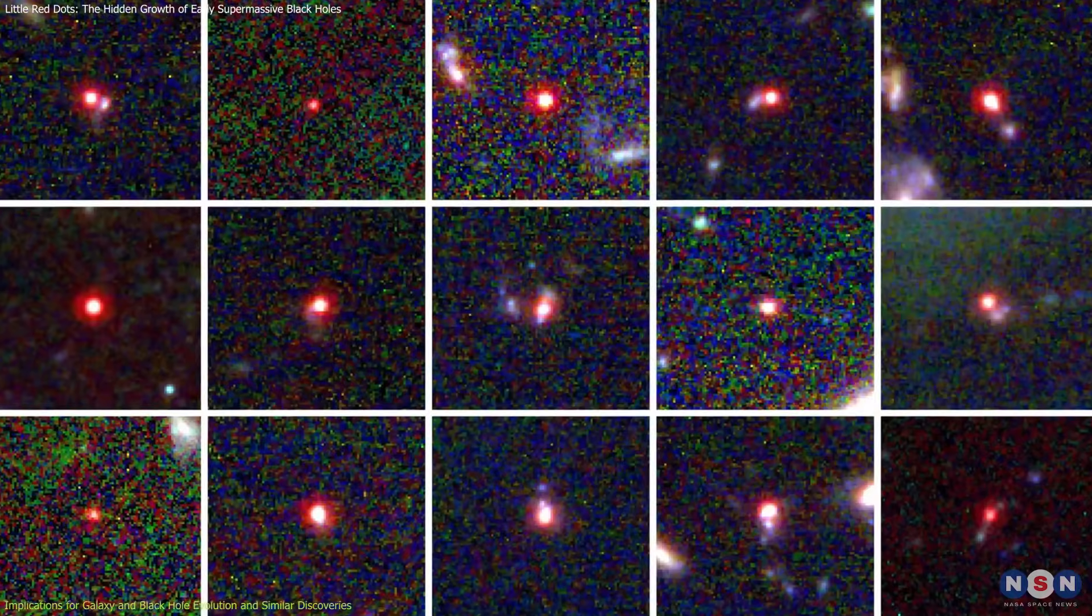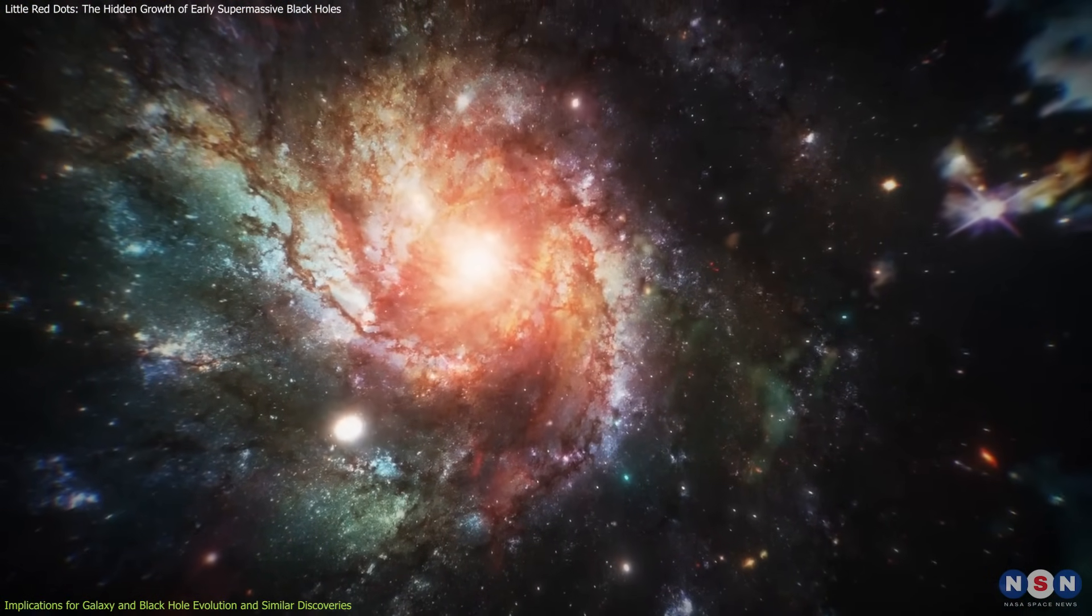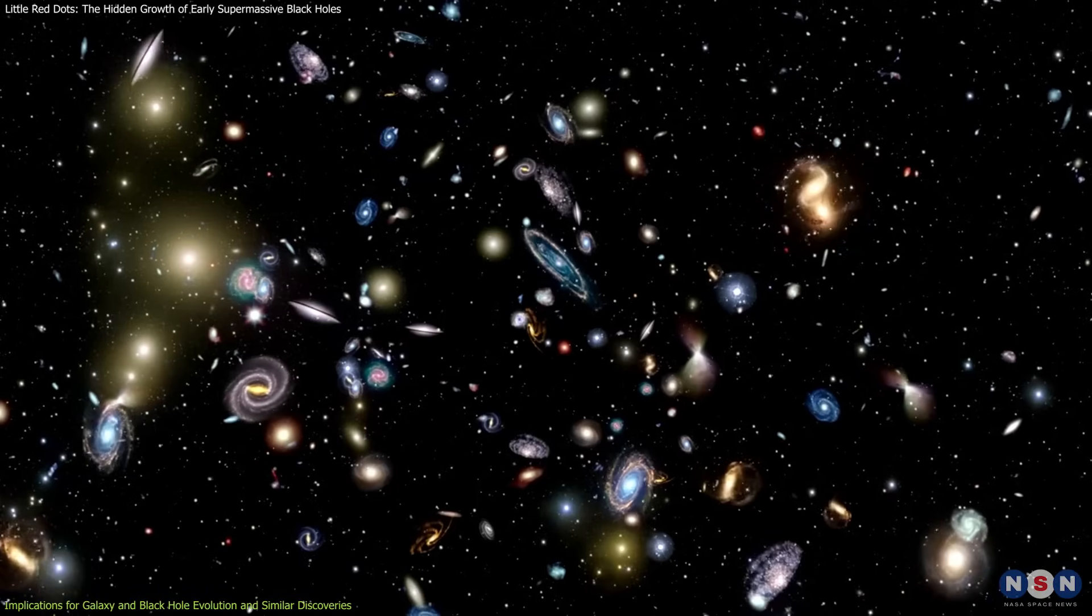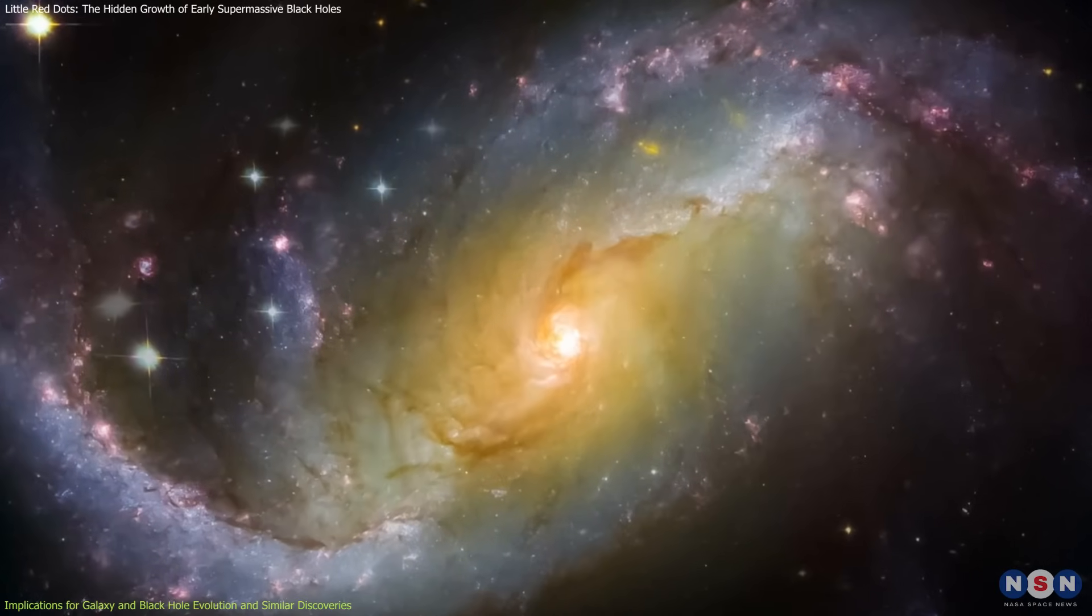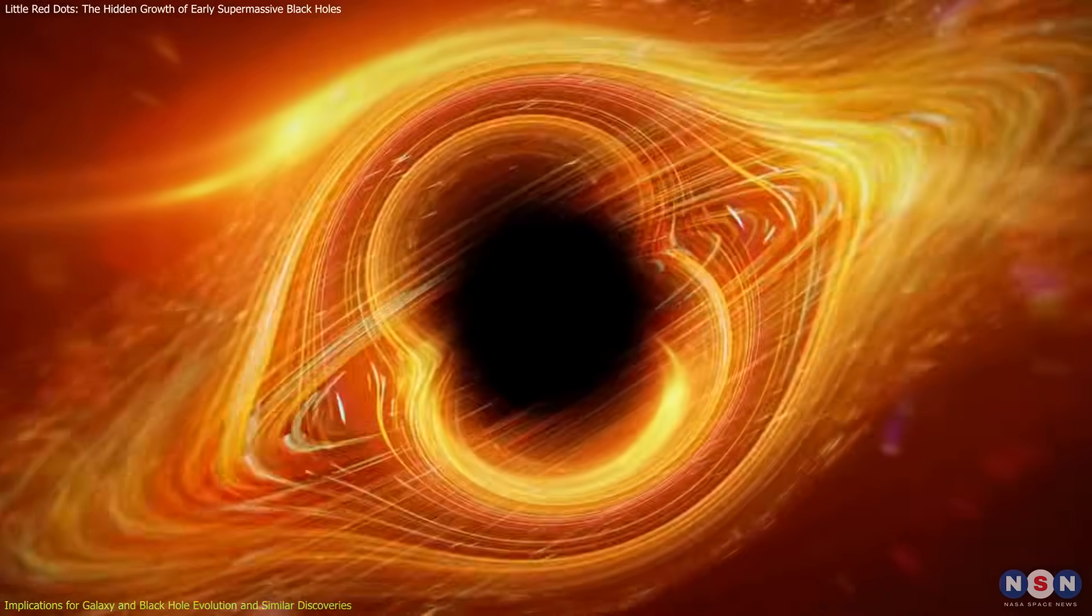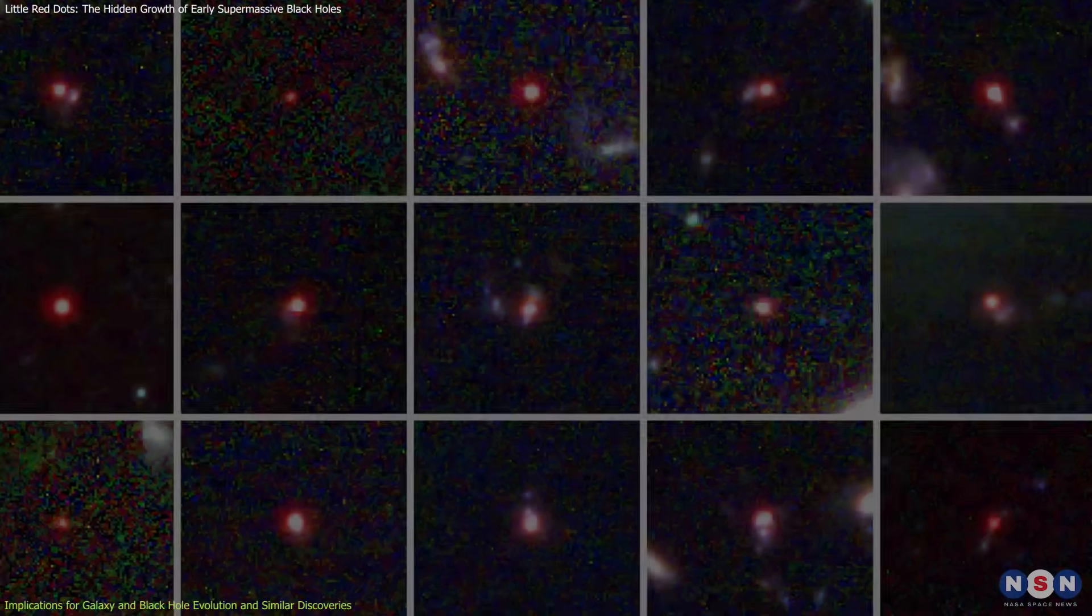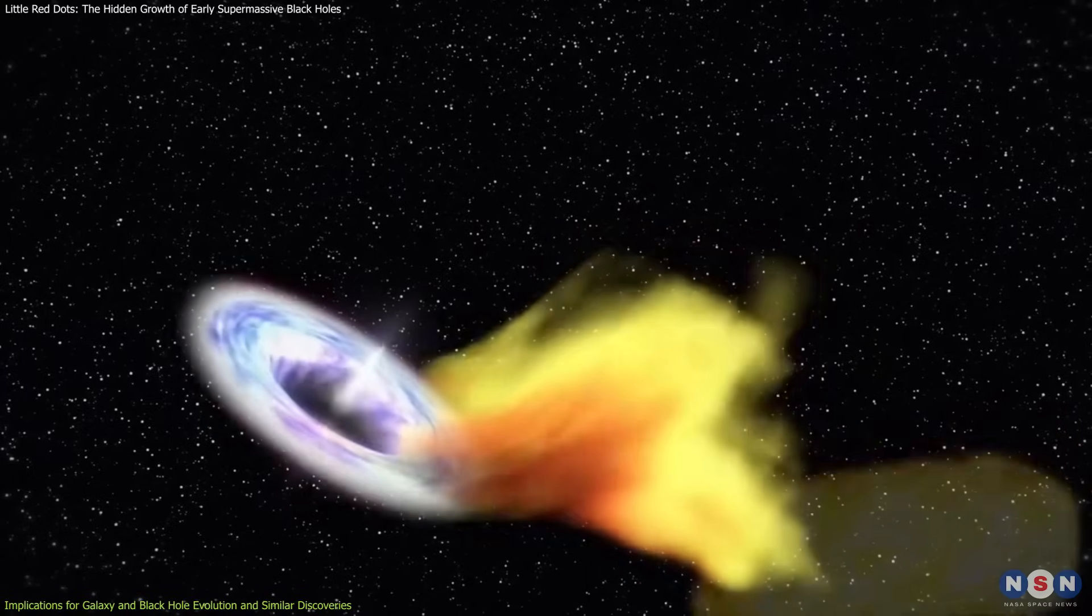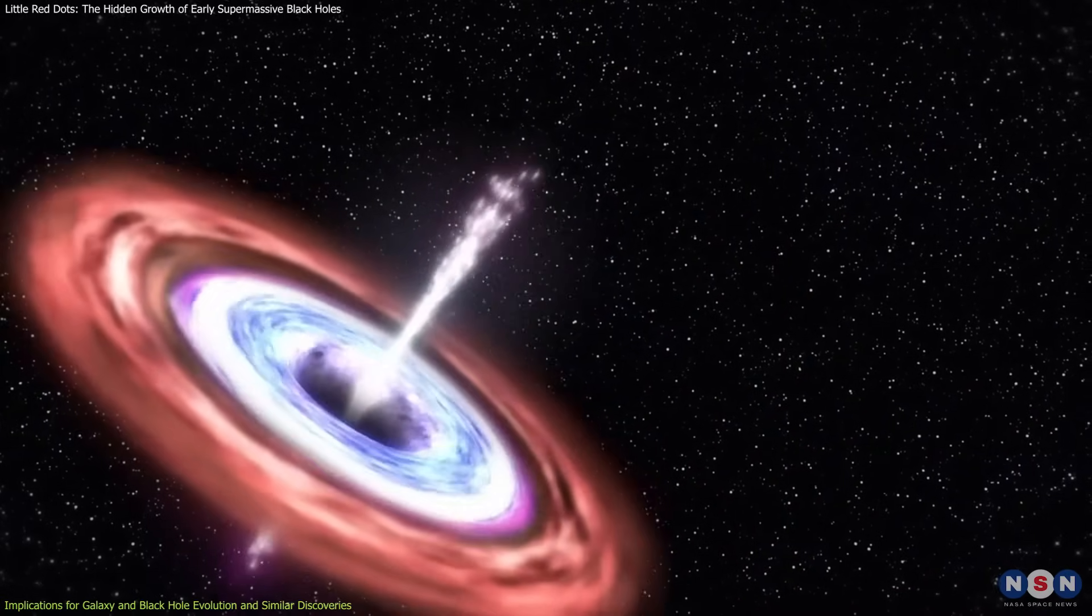The discovery of little red dots has major implications for how we understand the relationship between galaxies and their central black holes. In the modern universe, a well-established correlation exists between a galaxy's mass and the size of its supermassive black hole. However, LRDs suggest that this relationship was much less predictable in the early universe. Observations indicate that some black holes may have grown much faster than their host galaxies, challenging conventional models that assume a synchronized evolution between the two.